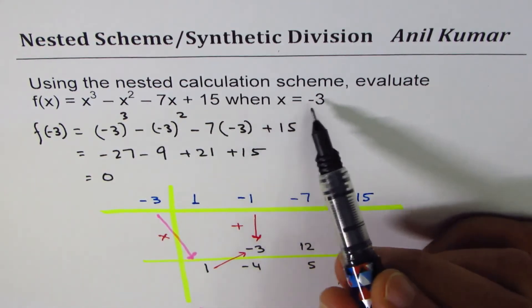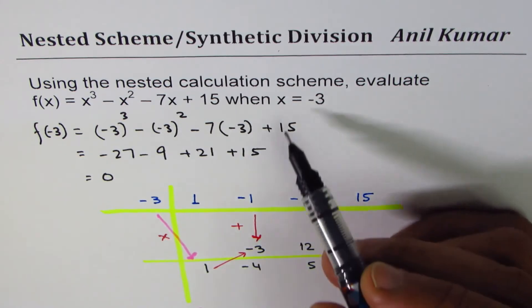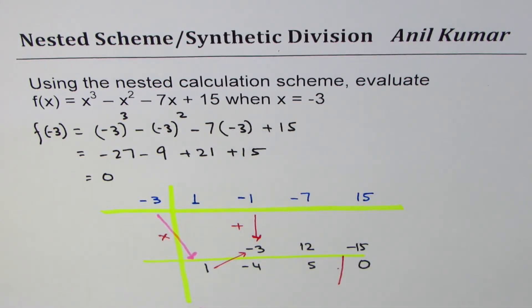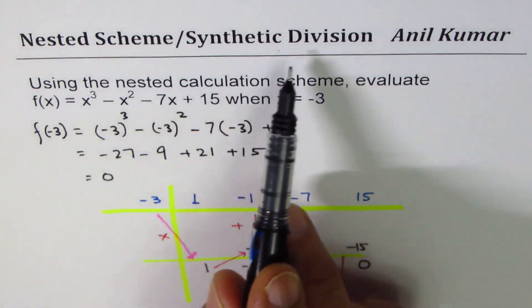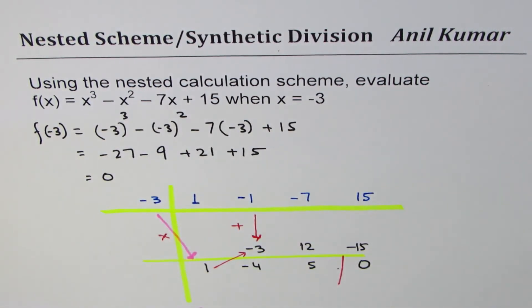In synthetic division, that's, as you know from remainder theorem, also the value of the function at the given value of x. I hope the process is clearly understood since it is similar to synthetic division. I've kept this topic as nested scheme oblique synthetic division.